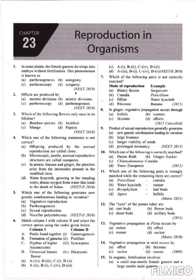Next question: which one of the following pairs is wrongly matched while the remaining three are correct? Options: Penicillium-conidia, water hyacinth-runner, Bryophyllum-leaf buds, agave-bulbils. Water hyacinth shows offset type of vegetative propagation, not runner. So question number 11, the answer is option B. The eyes of potato tubers are axillary buds — question number 12, the correct option is D.